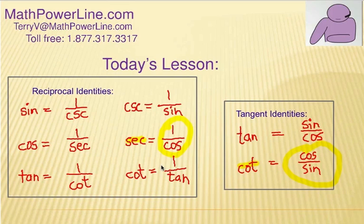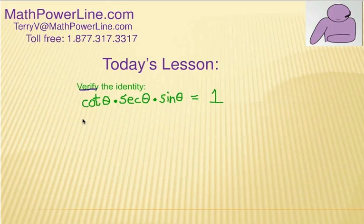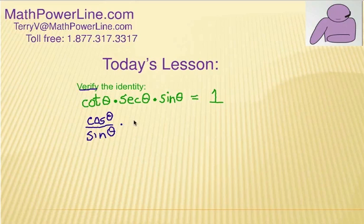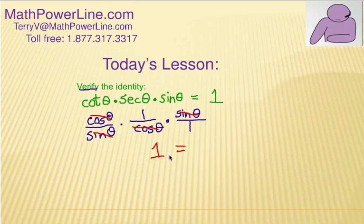So cotangent theta is going to be cosine theta over sine. Secant is going to be 1 over cosine. And let's go ahead and leave the sine theta as sine theta, but we'll put it over 1. Now it's a simple matter of canceling our common factors. And I noticed that everything else is canceled out. So now we have certainly verified that that is an identity, that it is equal to 1.